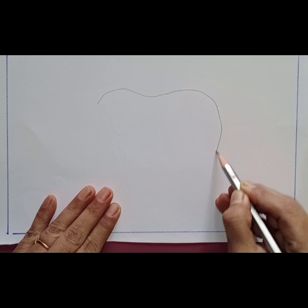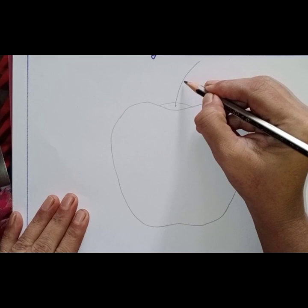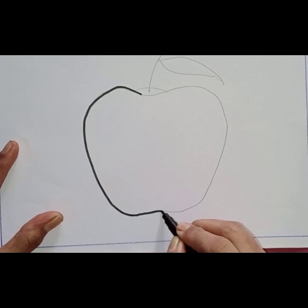Now children, draw an apple in your drawing book. Now give black sketch pen outline.